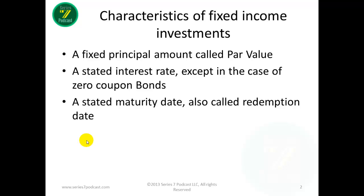That's how fixed income differs significantly from equity. An equity has no maturity date — they may have call features, but there is no maturity date when you can plan on getting your money back. Fixed income investments have a specific date called the redemption date or the maturity date, where you're going to get the par value of the investment back — not necessarily what you paid for the bond if you bought it on the secondary market, but the par value of the bond.